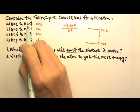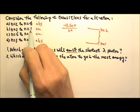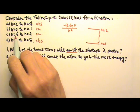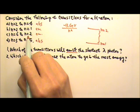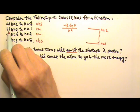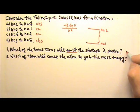Therefore, any transition that involves n=1 is going to have more energy than the transition between two other states. Therefore, b is the one that involves the most energy. So the answer for 1 is b.